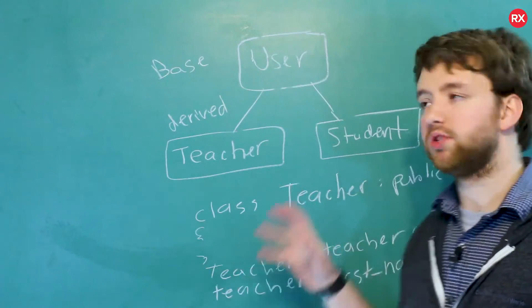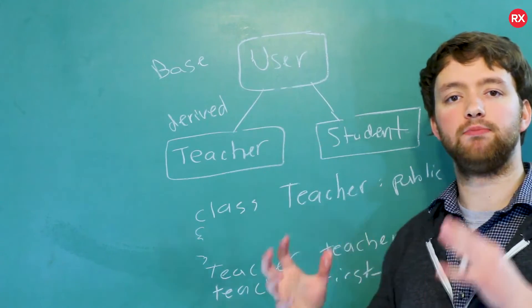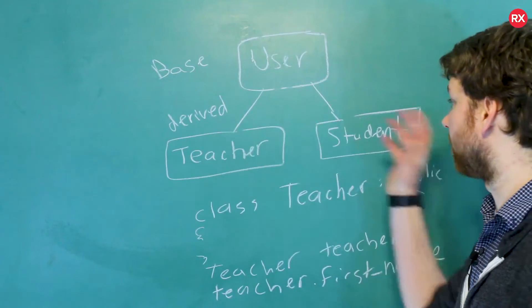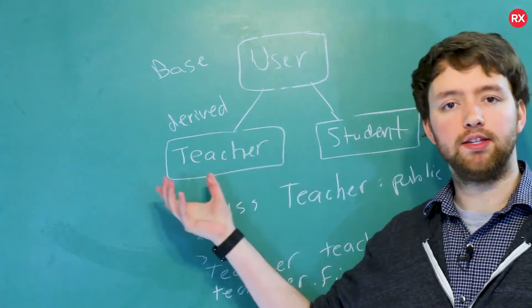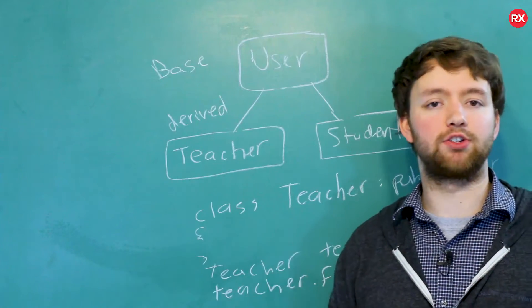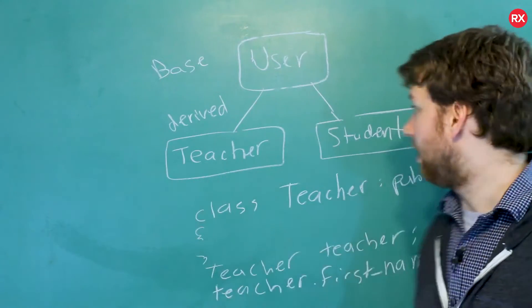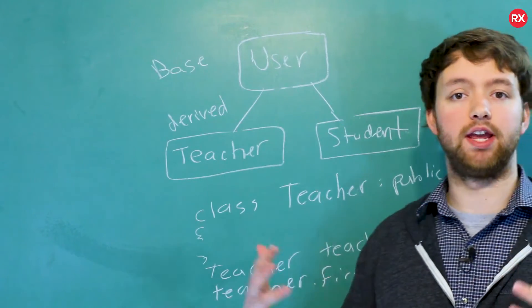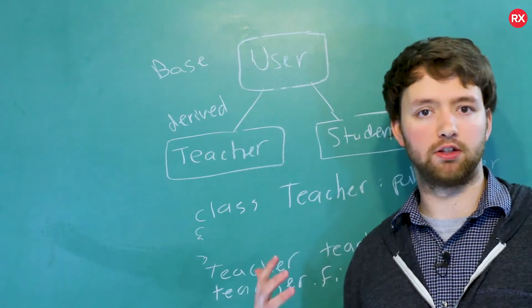Now, why would you do this? Why not just make them both users? Well, probably because there's some distinguishing factor between teachers and students. For example, inside of the teacher's class, you can have a collection of classes teaching. Inside of the student class, you could have a data member such as the student's major if this was a college.